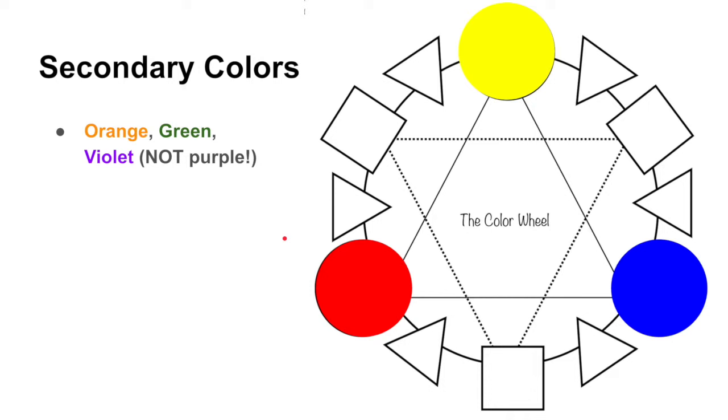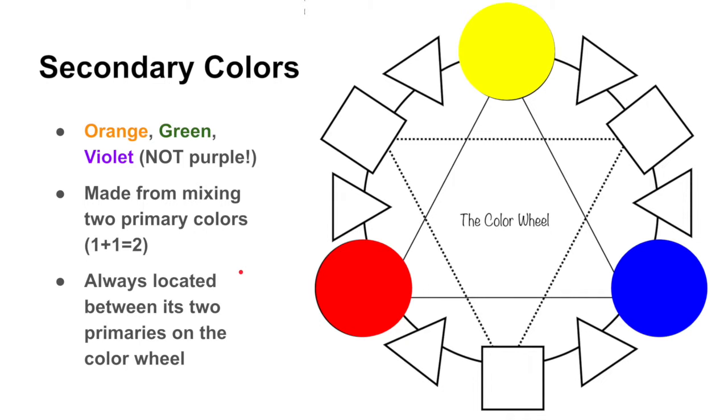And we create the secondary colors by mixing two primary colors. So think about math right now. Primary equals one, so one plus one equals two. And they're always located between the secondary colors, two primaries, on the color wheel.